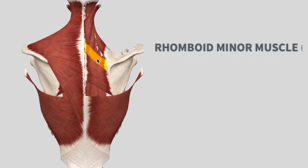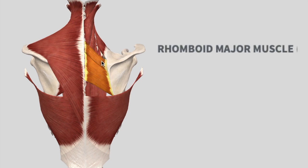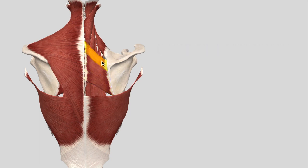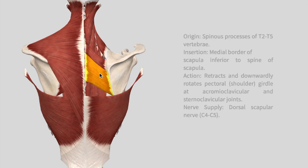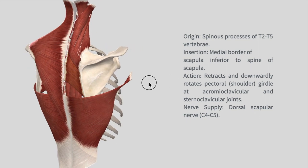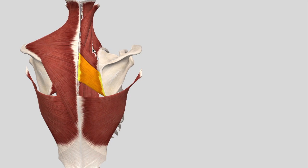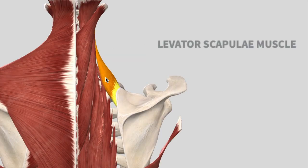The next set of muscles: we have the rhomboid minor muscle followed by the rhomboid major just below. For both the rhomboid minor and rhomboid major, the origin starts from the spinous process of T2 to T5, with insertion at the medial border of the scapula. The action is to retract and downwardly rotate the pectoral girdle.